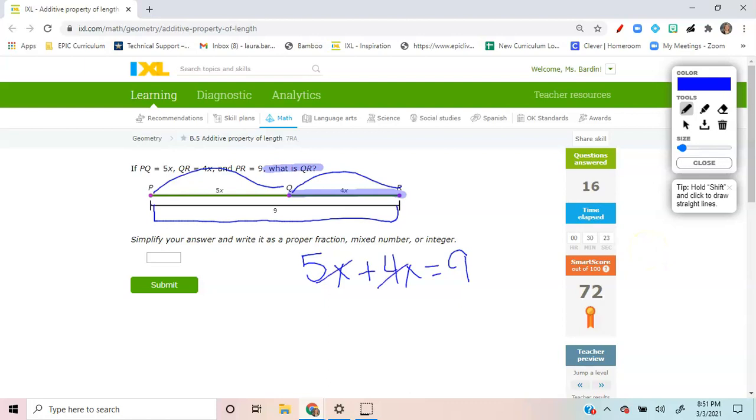5X plus 4X. So one of the concepts that students want to hear is that when it's on the same side of the equal sign, all I do is combine those two together. So 5X plus 4X gives me a total of 9X is still equal to 9. What is the opposite of 9 times X? It would be 9 divided by. So I'm going to divide both sides by 9, and I am left with X is equal to 1.